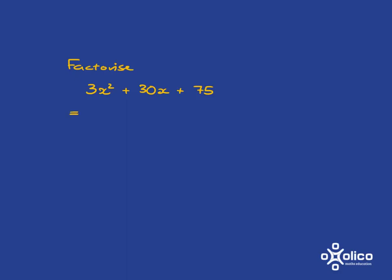And here there is 3 that can divide into each of these terms. So we're going to take 3 out as a common factor. And we're left with this.